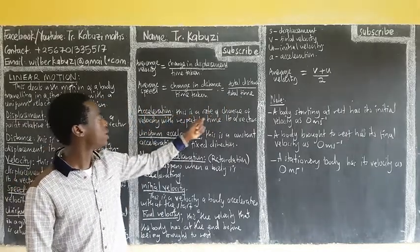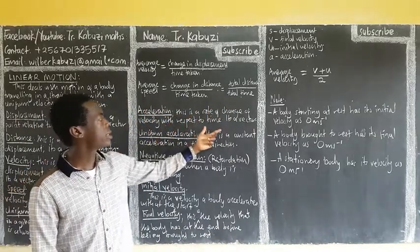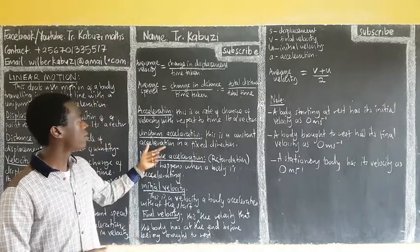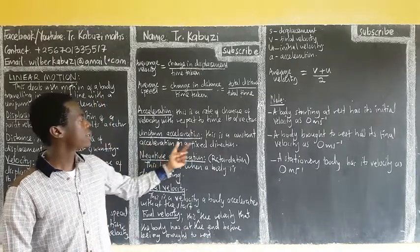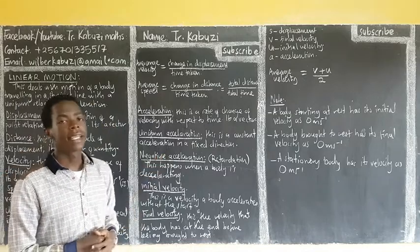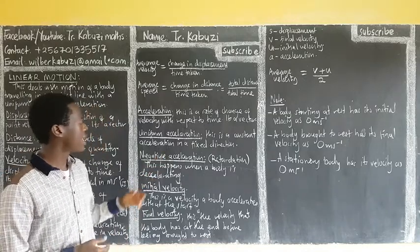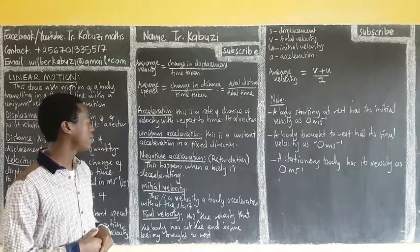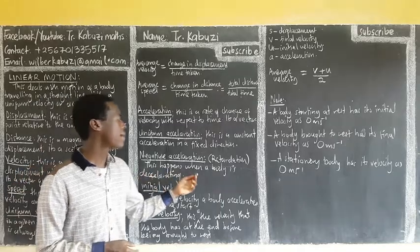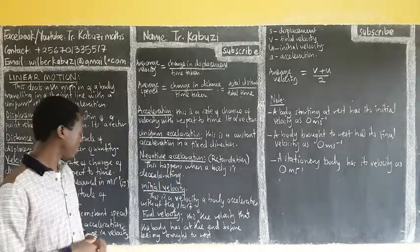Acceleration is the rate of change of velocity with respect to time, and velocity is a vector. Uniform acceleration is a constant acceleration in a fixed direction. Negative acceleration — what we call deceleration — happens when the body is slowing down.